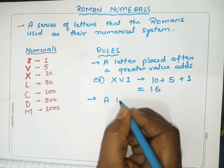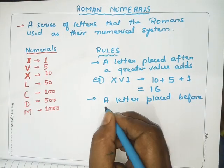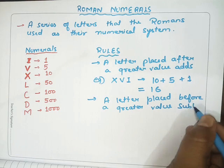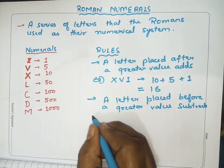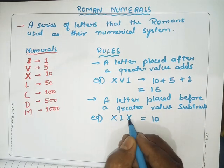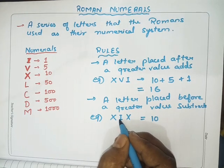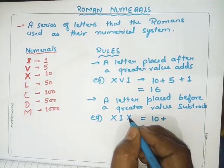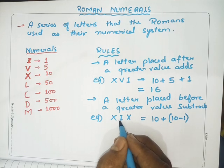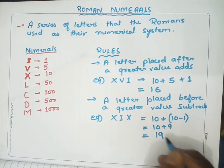Rule 2: a letter placed before a greater value subtracts. For example, XIX — X is 10, I is 1, X is 10. Here I comes before the greater value X, so we subtract: 10 + (10 - 1) = 10 + 9 = 19. So XIX represents 19.